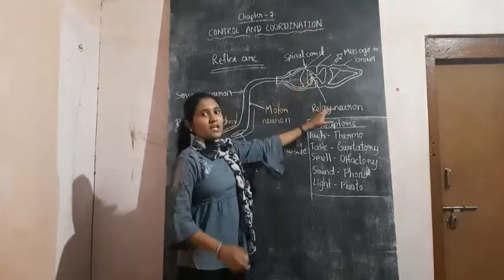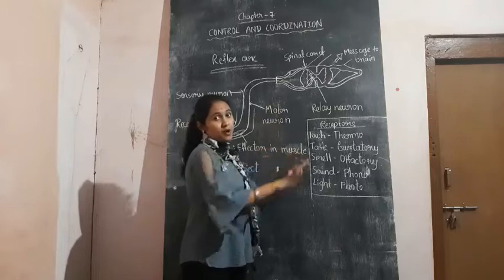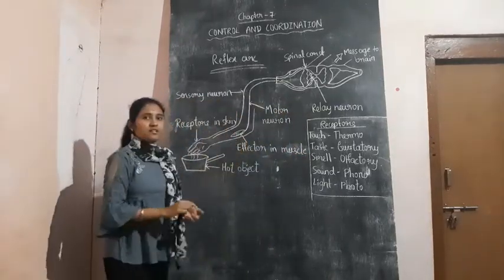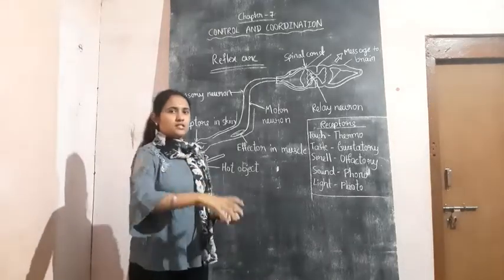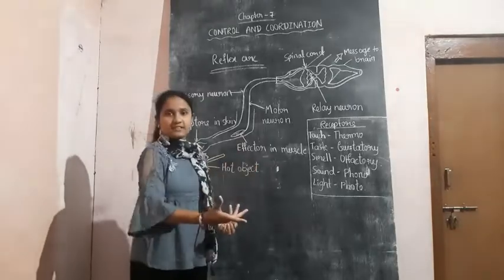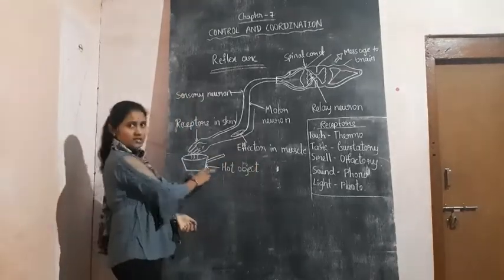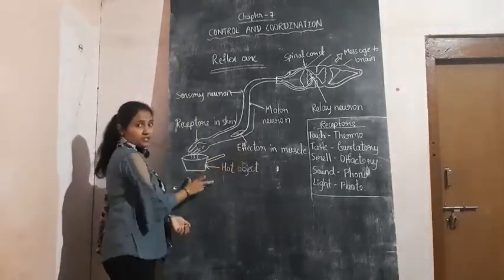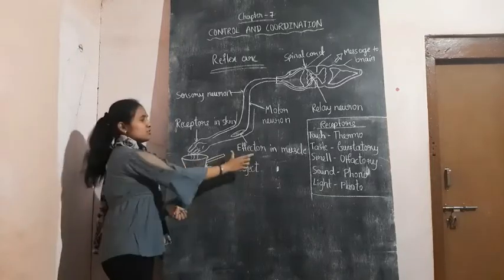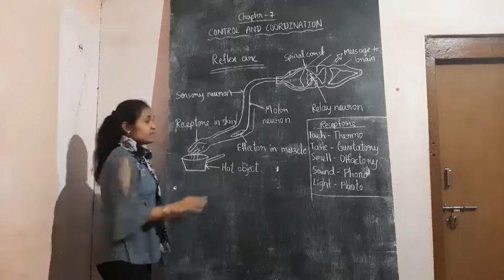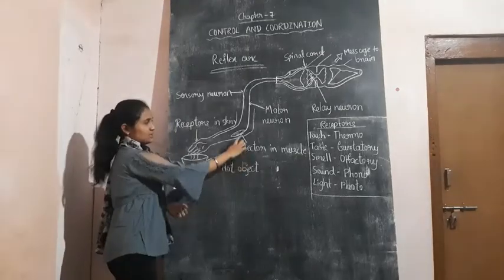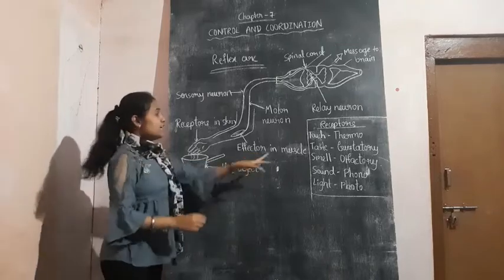The spinal cord sends you the response and decision to the effector. Effector means whatever action you do — whether you move your hand or similar things — those are the effects. This is the cause and this is the effect. From this cause, you move your hand — that is the effect. So that part is known as the effector in the muscle.